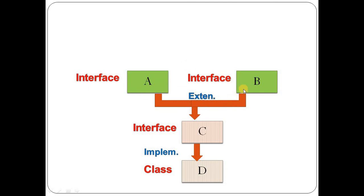In a hierarchical diagram showing multiple inheritance: if A and B are both interfaces, and C is also an interface, you use extends. Then class D, which is of type class, takes responsibility to implement all the abstracted methods from interfaces A, B, and C, using the implements keyword.